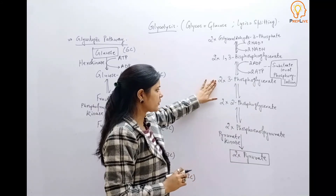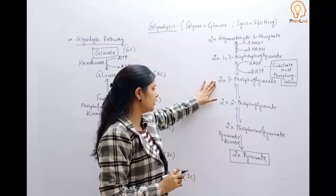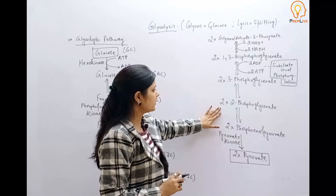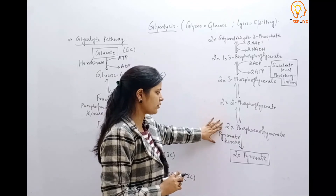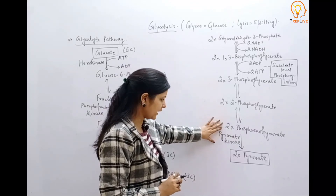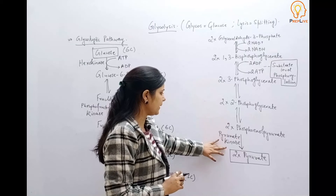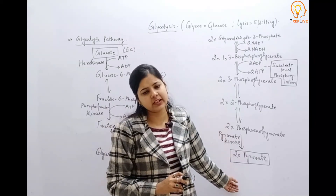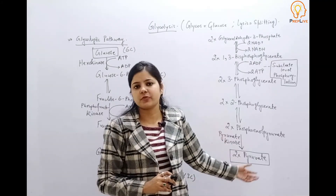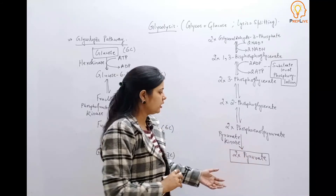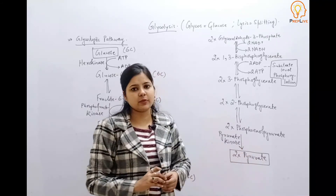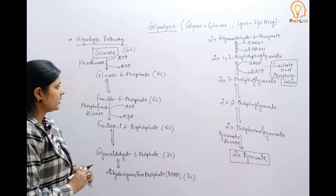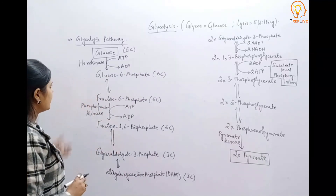Two molecules of 3-phosphoglycerate are then reduced to two molecules of 2-phosphoglycerate, which then get converted into two molecules of phosphoenolpyruvate. With the help of enzyme pyruvate kinase, it ultimately gets converted into the final product, which is pyruvate or pyruvic acid. This is the whole step of glycolysis.